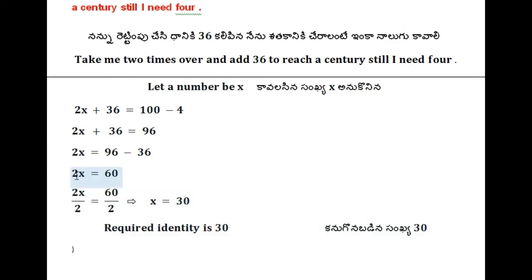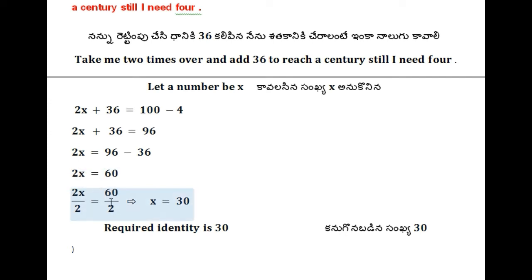Dividing by 2 on both sides — the coefficient of subject must be equal to 1. To eliminate 2 from the left side, dividing by 2 on both sides. 2 gets cancelled. x is equal to half of 60 — x is equal to 30. The required number is 30.